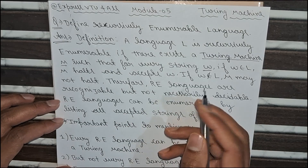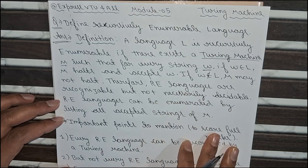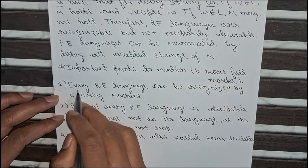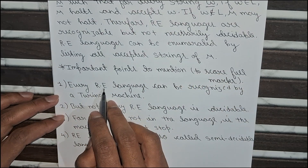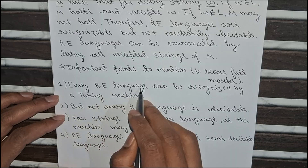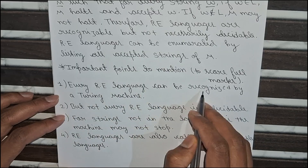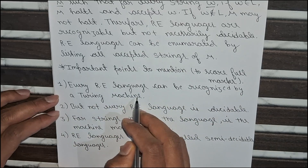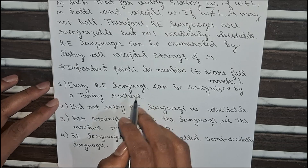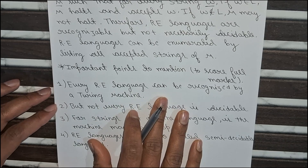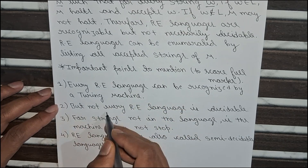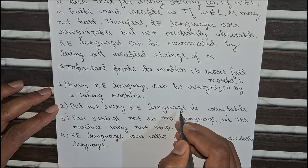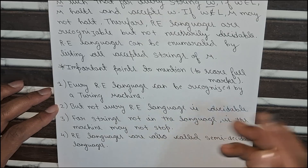Here are some most important points you should mention in the examination to score full marks. First point: every recursively enumerable language can be recognized by a Turing machine — this is a very important point you have to write. Second point: but not every recursively enumerable language is decidable.